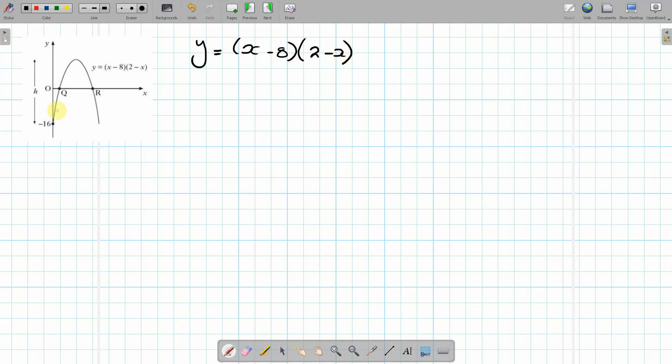Now Q and R are the roots, so the roots mean that the y coordinate is 0. So if you make y equal 0, so sub that in there. So we get 0 equals (x minus 8)(2 minus x).